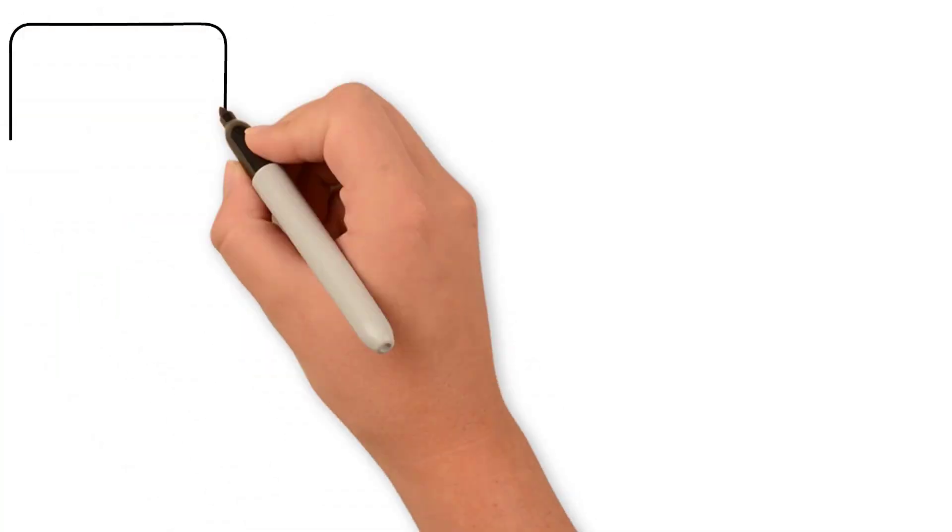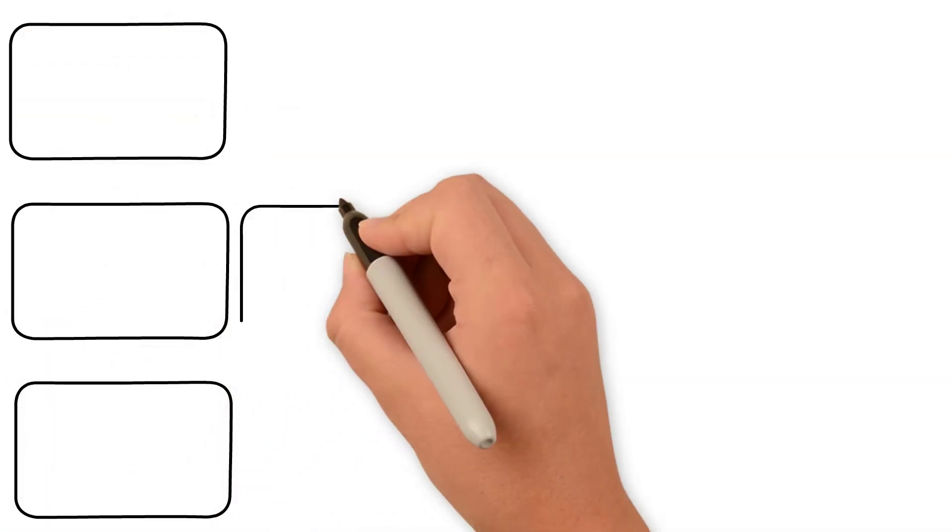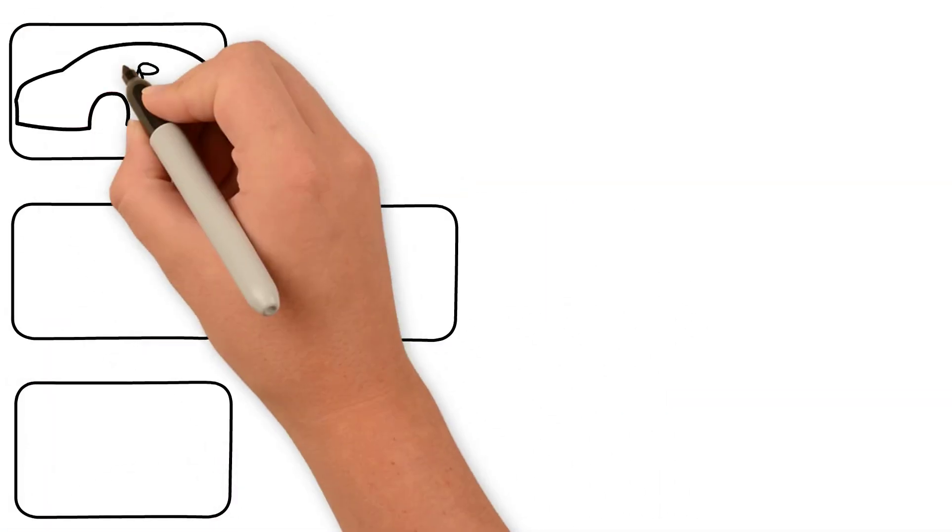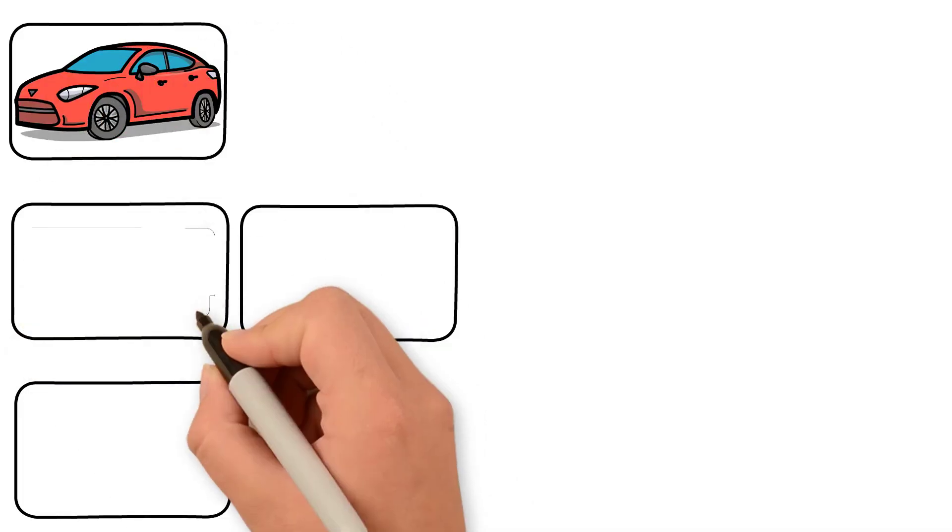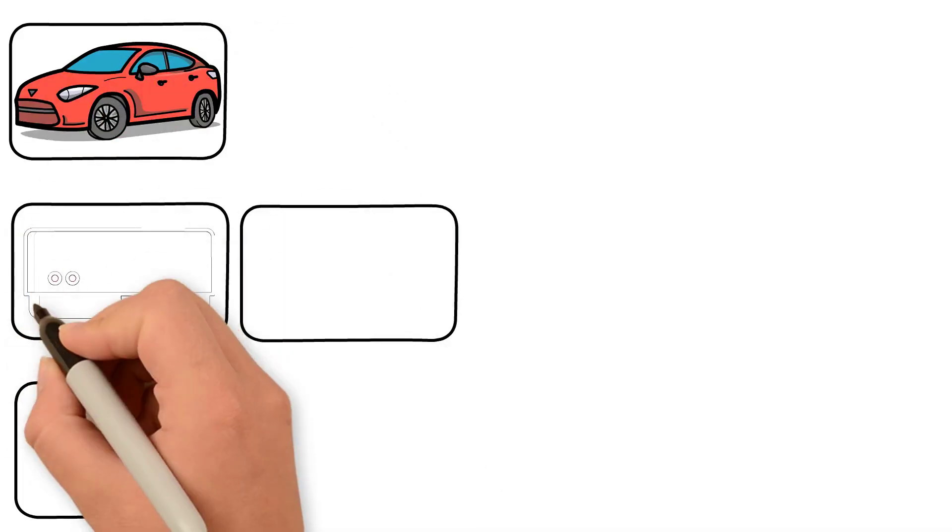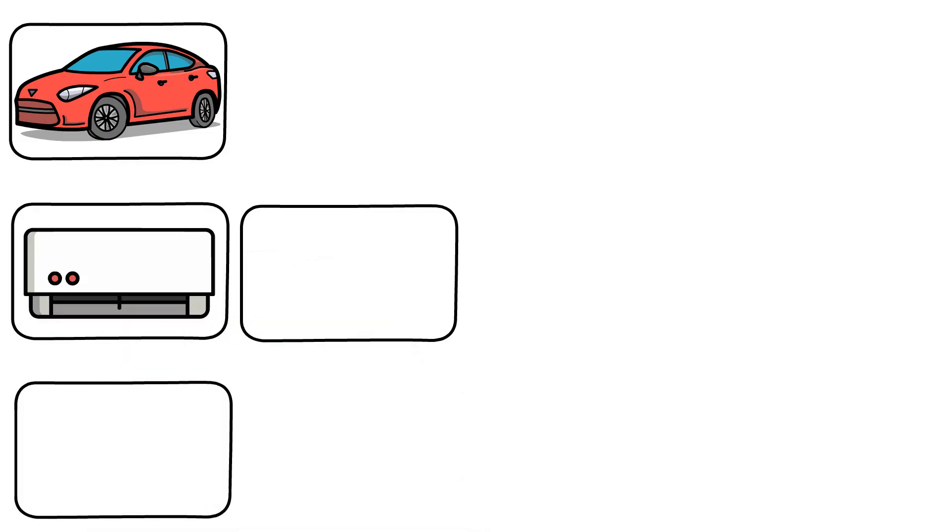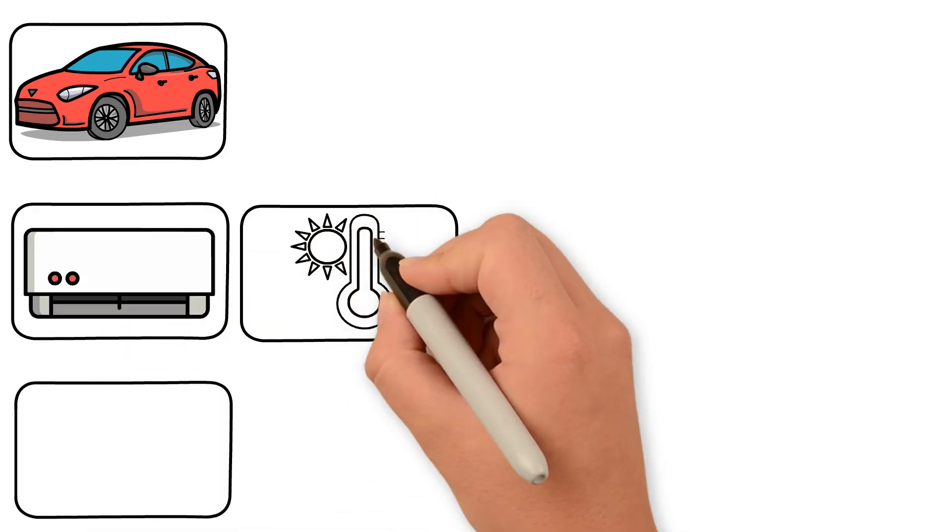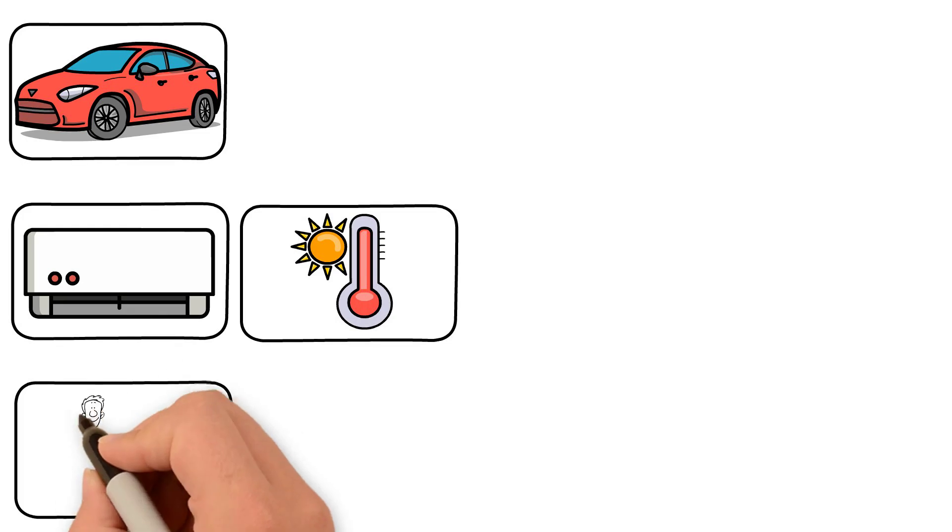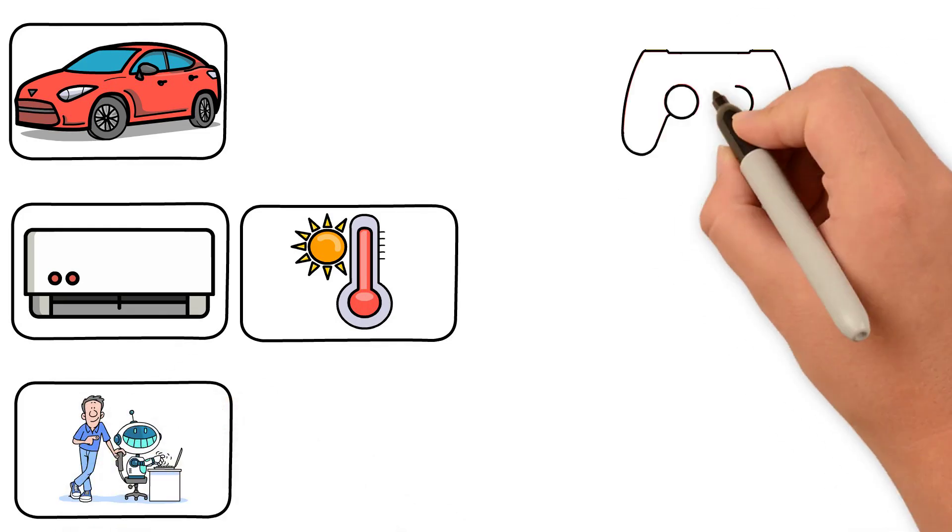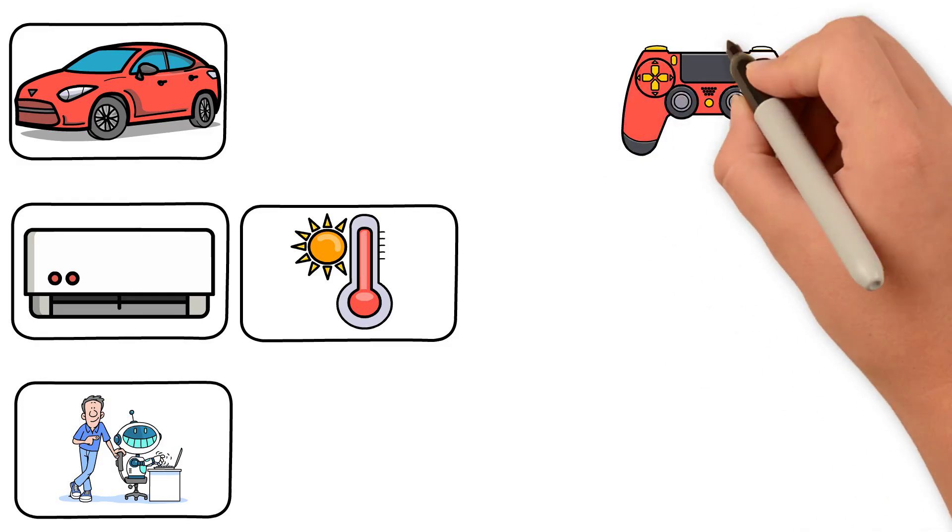Real life examples. Control systems are everywhere. Cruise control keeps your car at the same speed. Thermostat turns AC or heater on off based on temperature. Human body maintains body temperature. Robots know when to stop, turn, or pick something up. Even video games use control systems. They adjust the difficulty based on how you play.